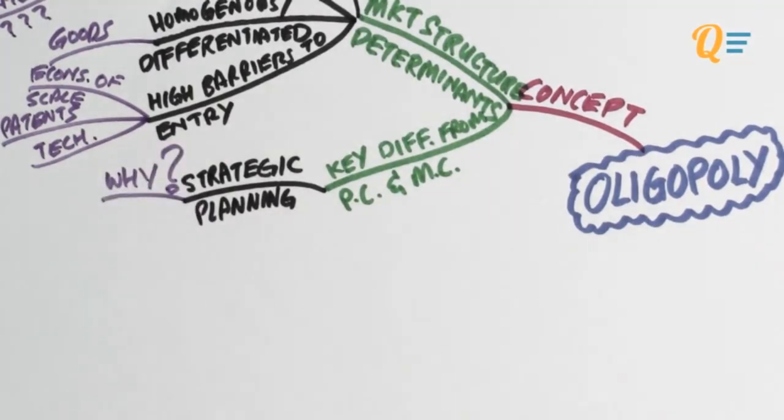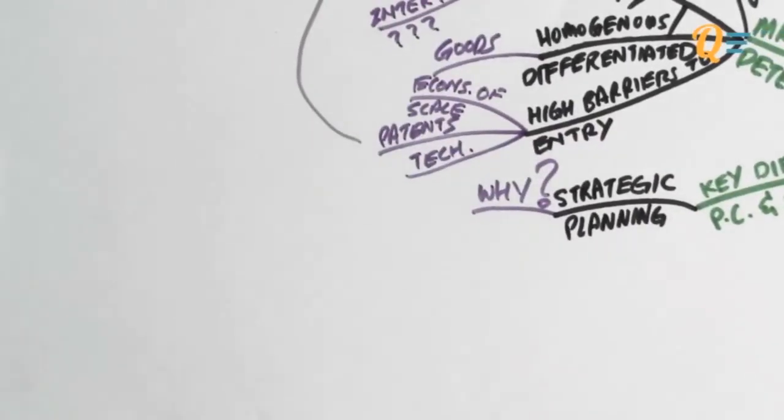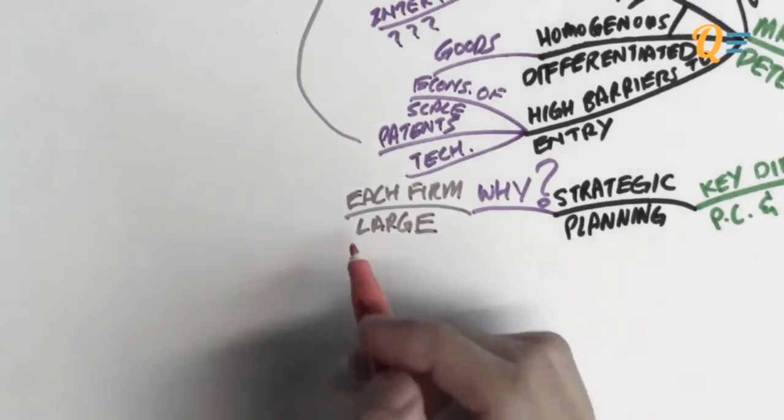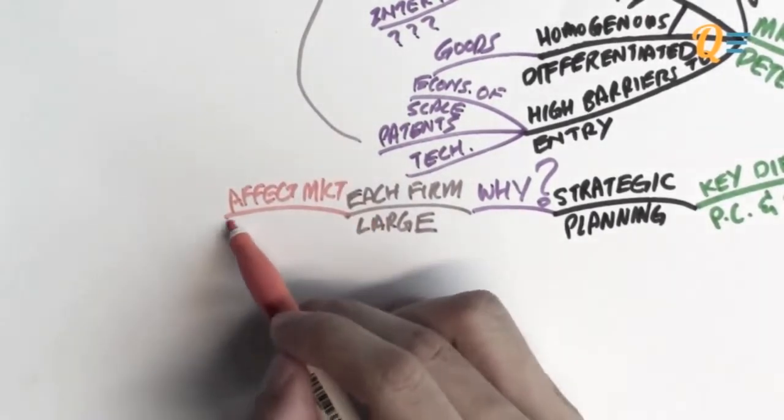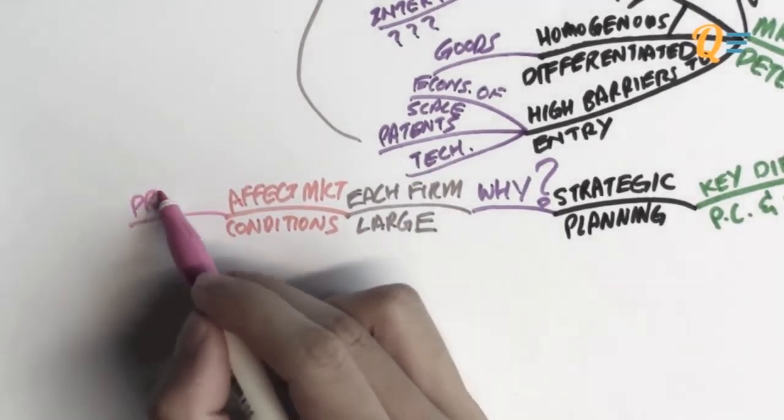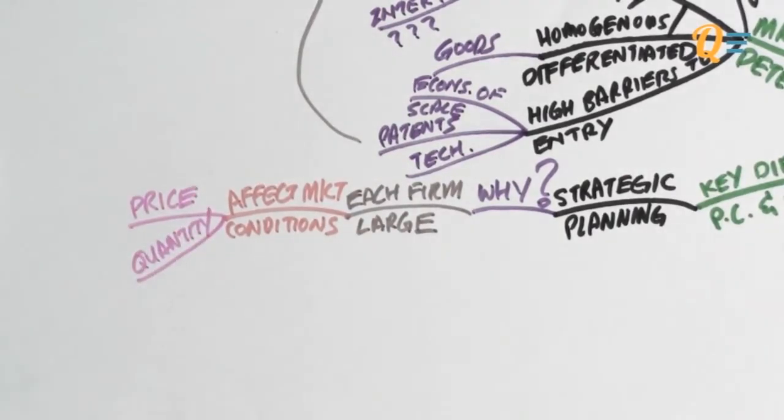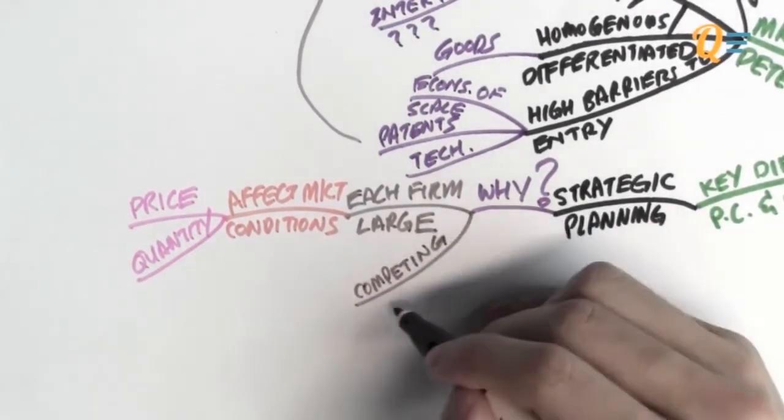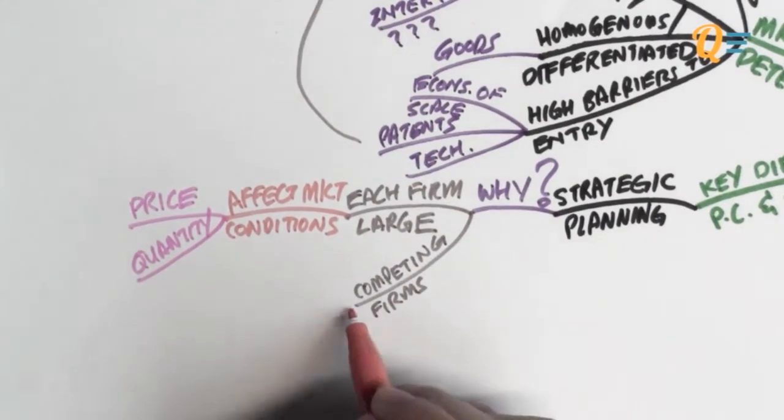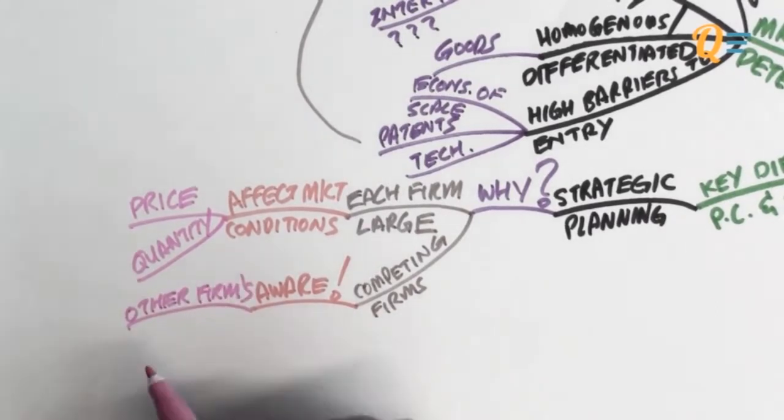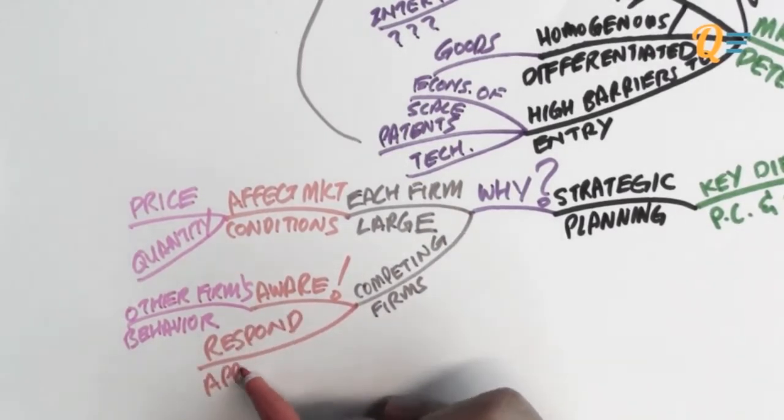Now why is there strategic planning in a market where there's only two firms? Well, that's because each of these two firms are actually large and they are large enough to affect certain market conditions. And when I say market conditions, what I mean is things like the equilibrium price as well as the equilibrium quantity. So these are the conditions that can be affected by each firm's behavior. Therefore, the competing firms in this market will have to be very, very aware of the other firm's behavior. So they have to be very aware of the other firm's behavior and they must also respond appropriately according to how the other firm is behaving.